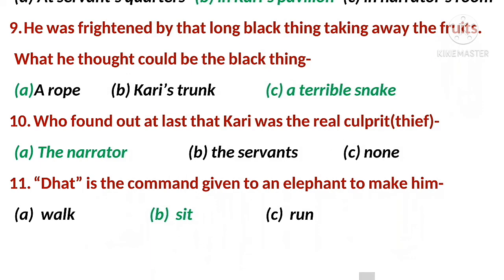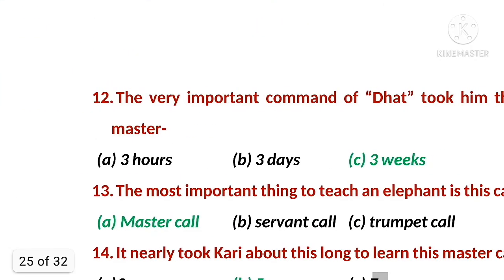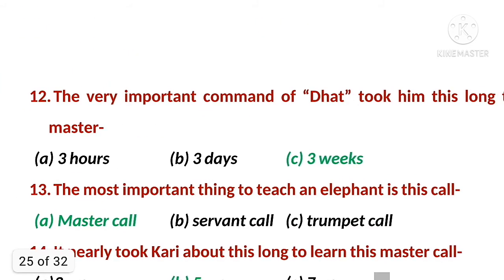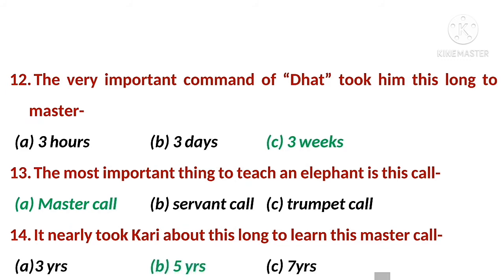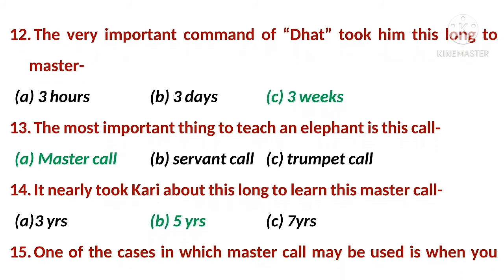Number twelve: the very important command that took him this long to master. The right answer is C — three weeks. Number thirteen: the most important thing to teach an elephant is this call. The right option is A — master call.